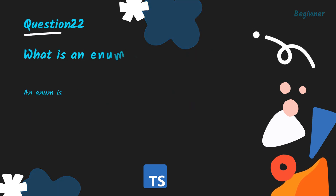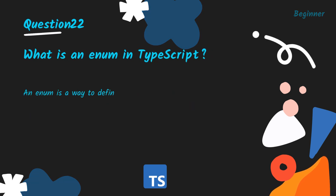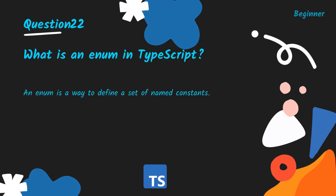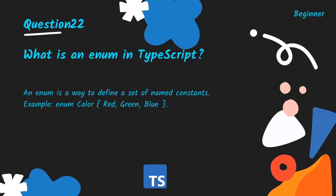What is an enum in TypeScript? An enum is a way to define a set of named constants. Example: enum Color { Red, Green, Blue }.